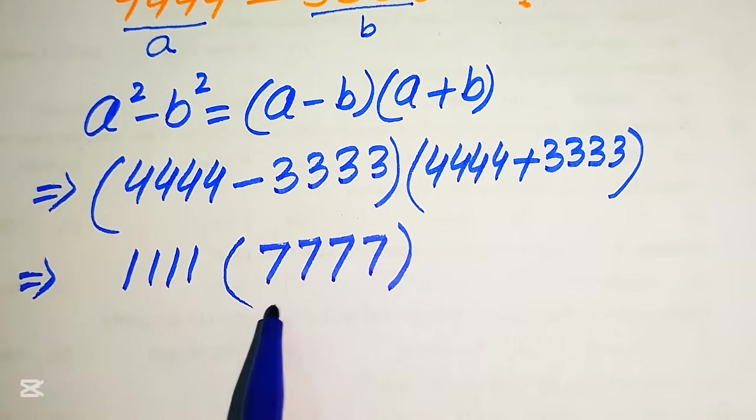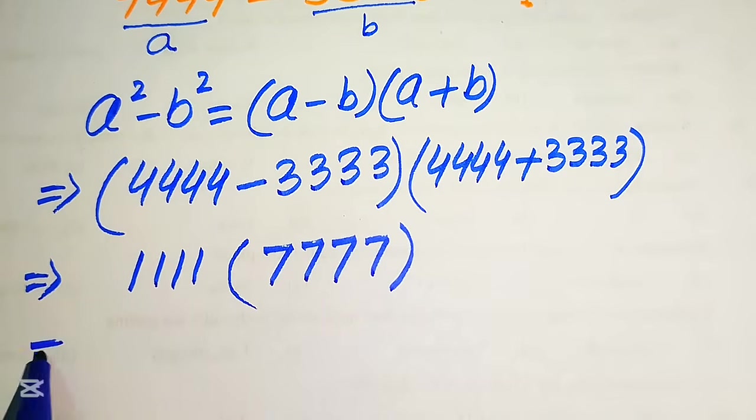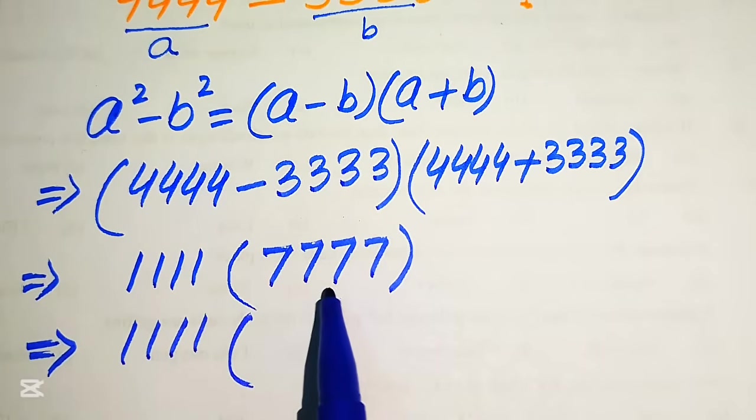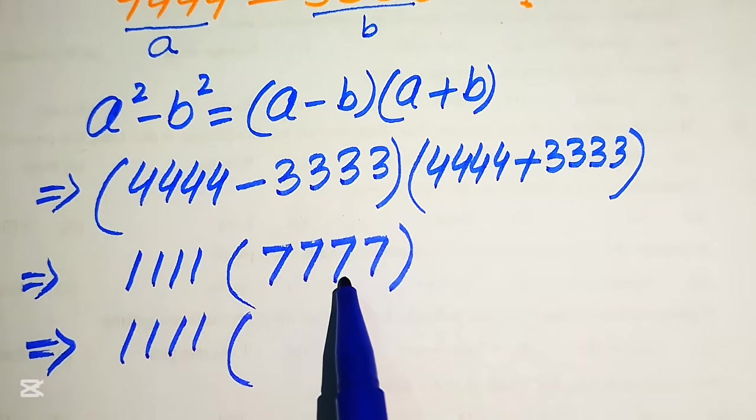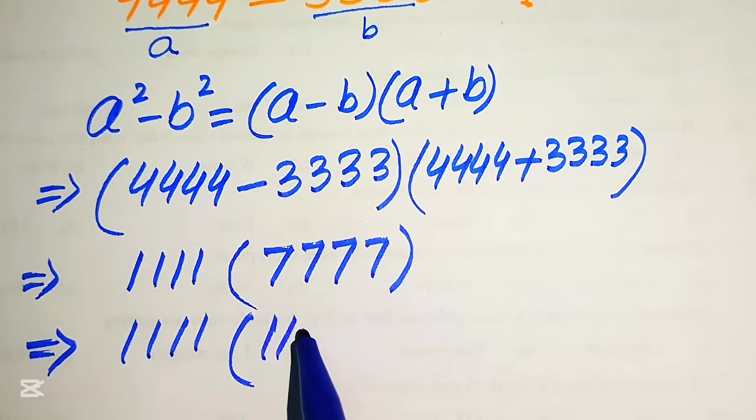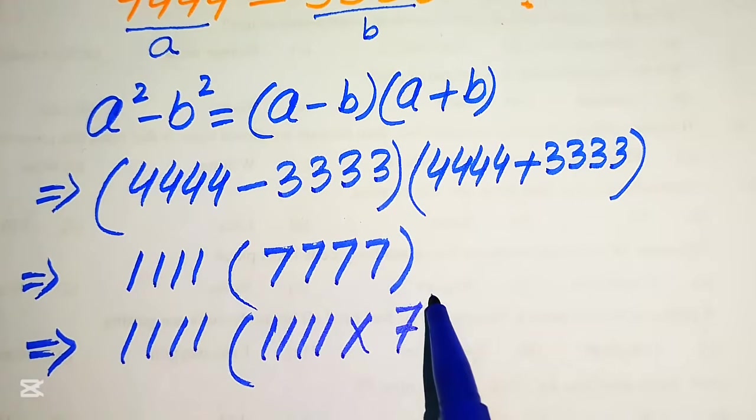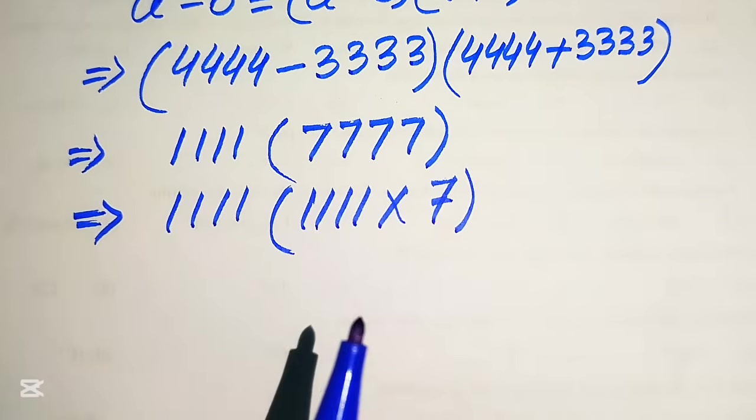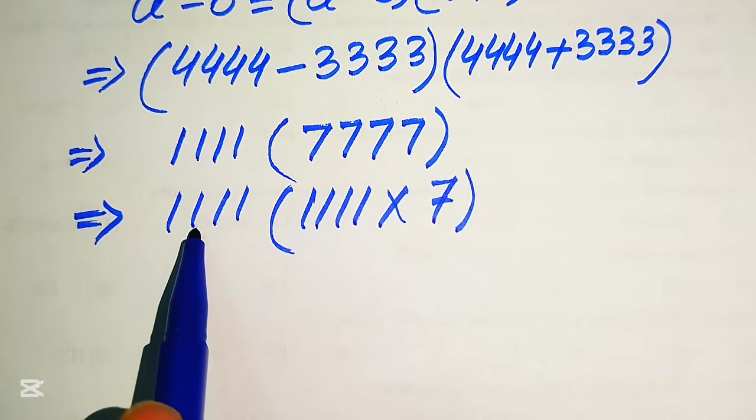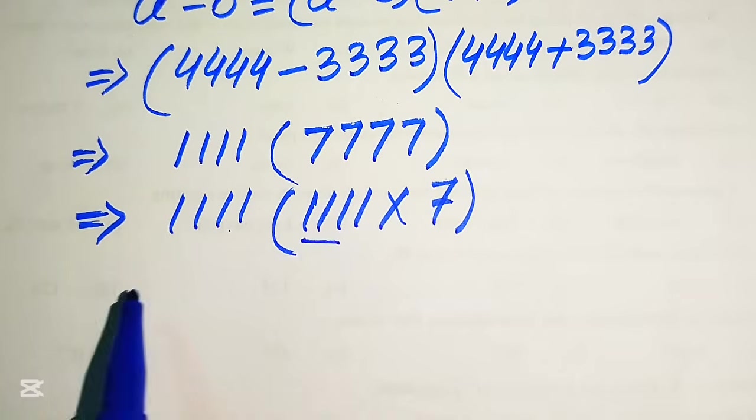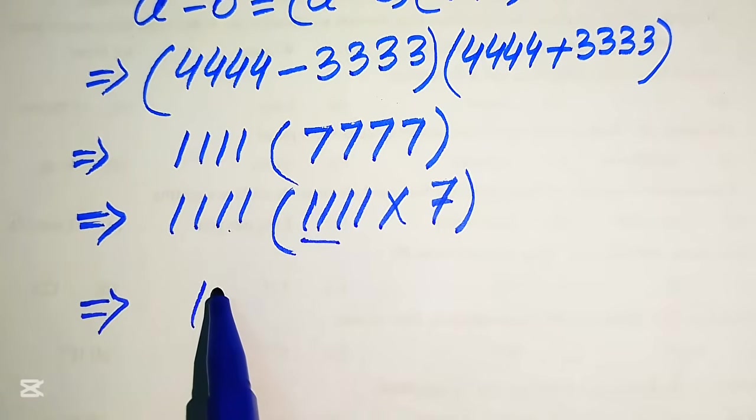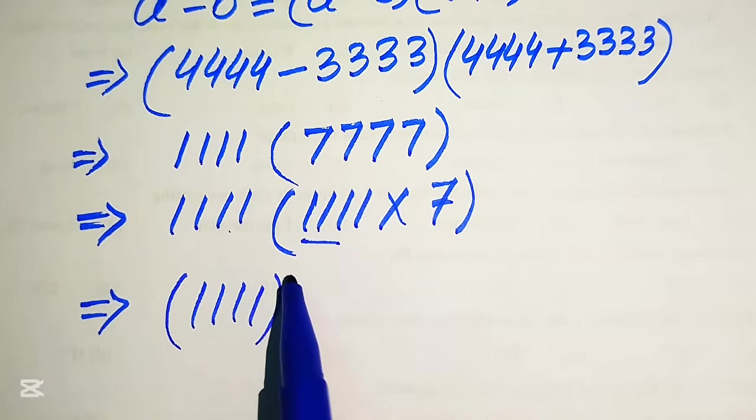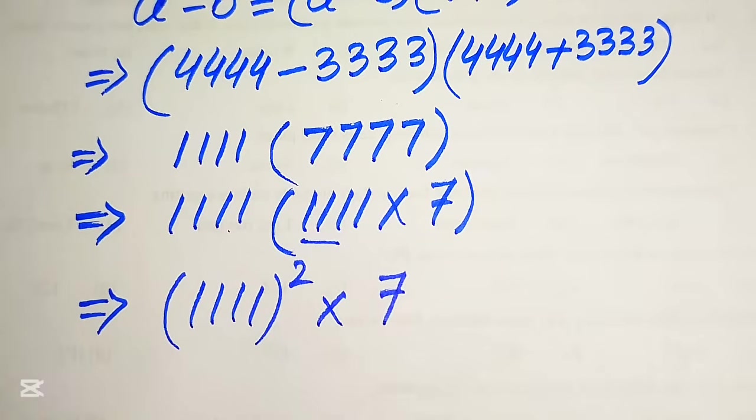Here we rewrite this term as, this is 1111 multiplied by 7. When you multiply this value by this you get again here this number and now here we multiply this 1111 with this term and we will obtain here 1111 and its whole square multiplied by 7.